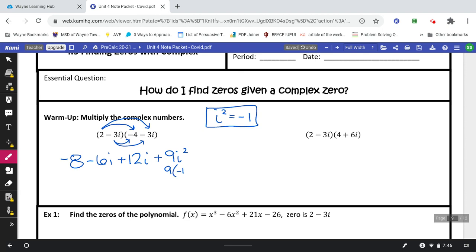So this will be 9 times negative 1, which is just negative 9. Then you're going to add your real numbers together, the negative 8 and the negative 9, to get negative 17. And you're going to add the imaginary numbers, negative 6i and positive 12i, to get positive 6i.